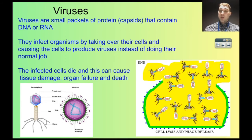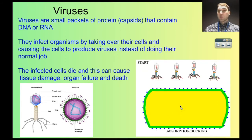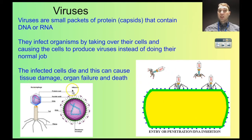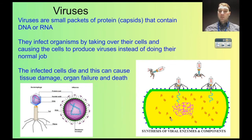Sometimes viruses are just produced constantly and they emit from the cell without killing it. The reason this is bad is because the cell isn't doing its regular job when it's making viruses. You can get cells dying, which leads to tissues dying off, and if enough tissues die off you get organ failure — and if the organs don't work, then you die. It depends on what kind of cells the virus infects.